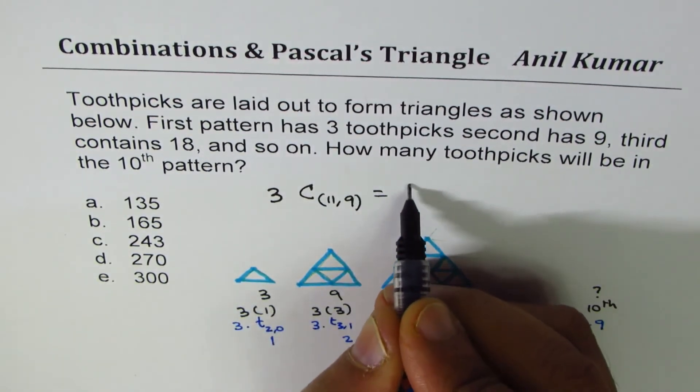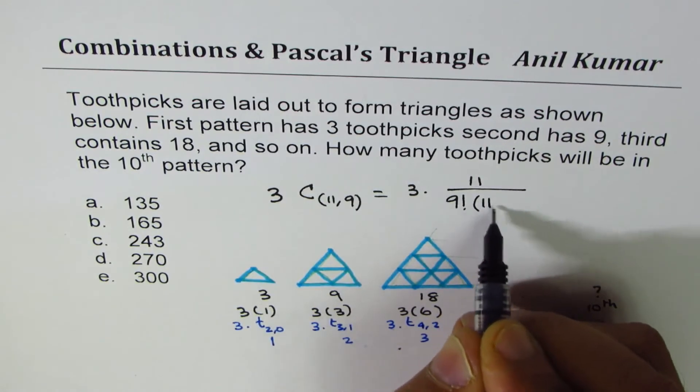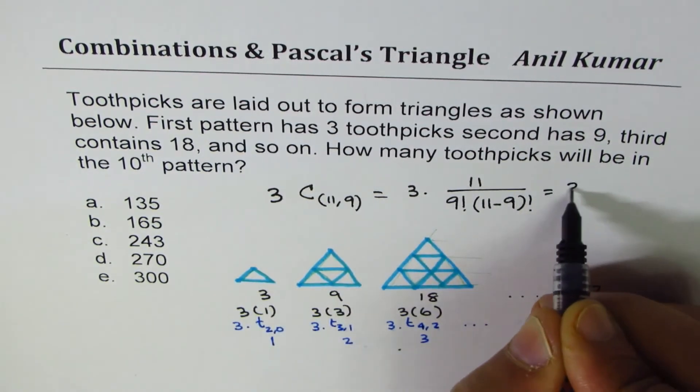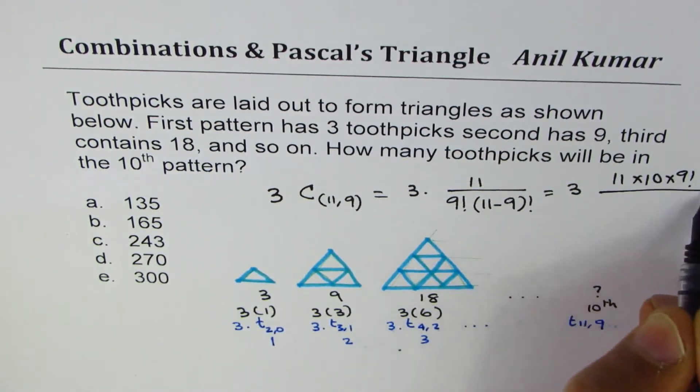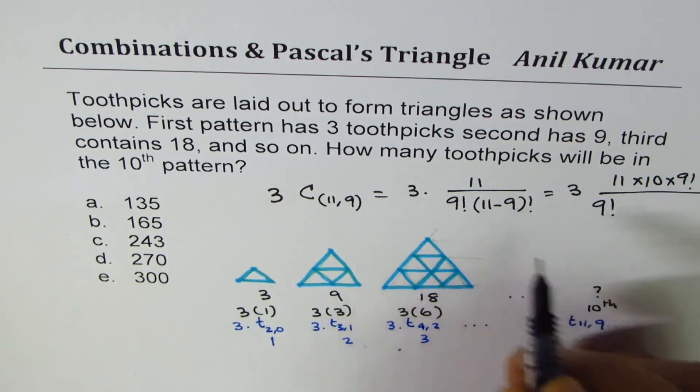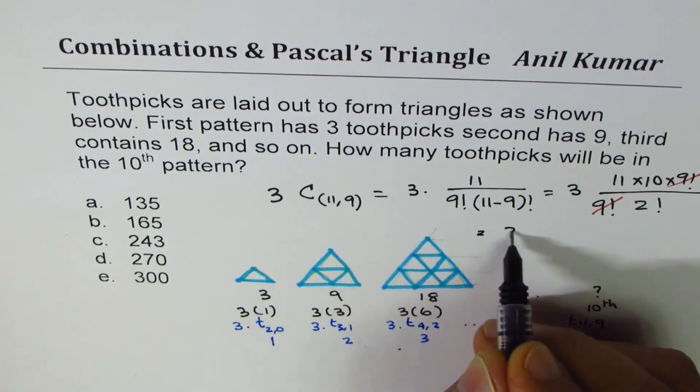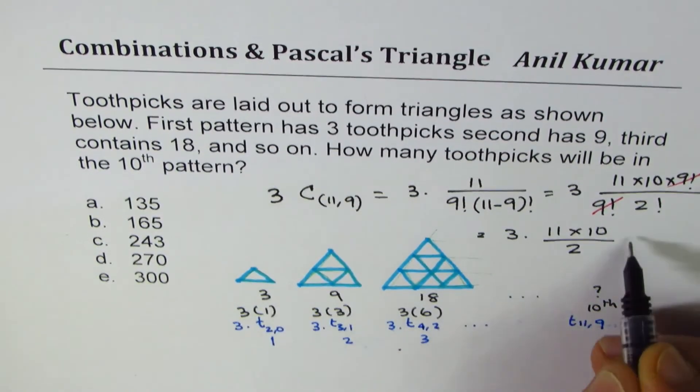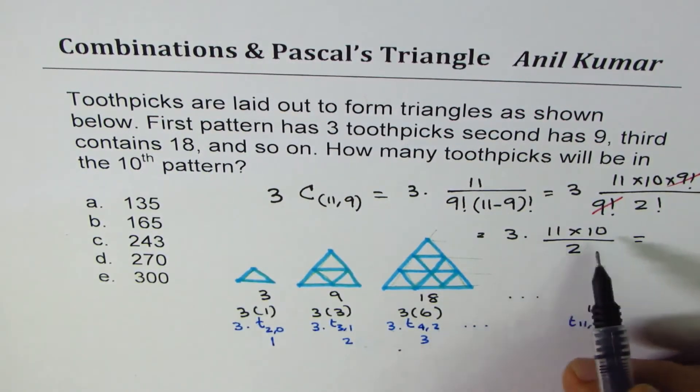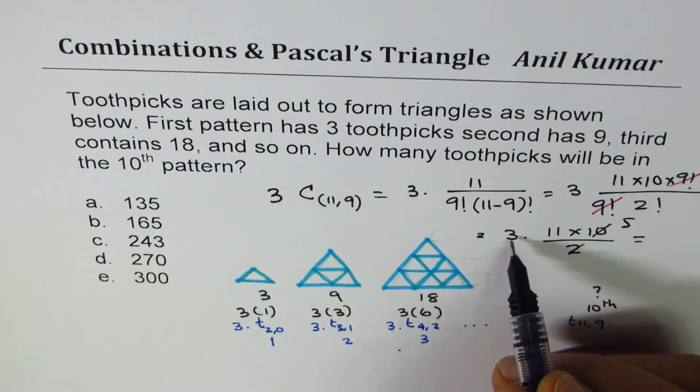And that really means it is 3 times 11 factorial divided by 9 factorial times (11 minus 9) factorial, right? Which is 3 times 11 times 10 times 9 factorial divided by 9 factorial. 11 minus 9 is 2, 2 factorial. Perfect. So 9 factorial cancels. And we get 3 times 11 times 10 divided by 2 times 1, which is 2.